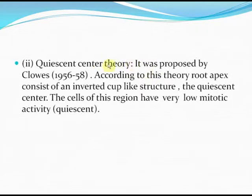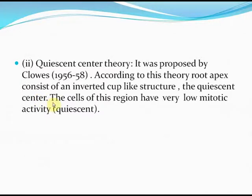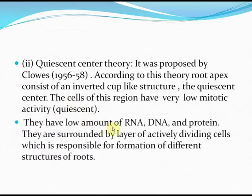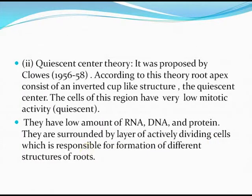The quiescent center theory was proposed by Clowes. According to this theory, the root apex consists of an inverted cup-like structure called the quiescent center. The cells of this region have very low mitotic activity, hence the term 'quiescent.' They have low amounts of RNA, DNA, and proteins, and are surrounded by a layer of actively dividing cells responsible for the formation of different structures of roots.